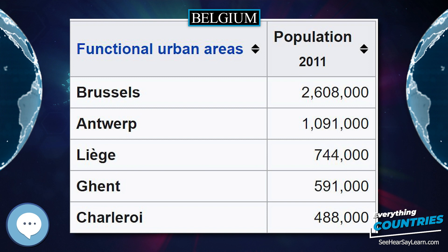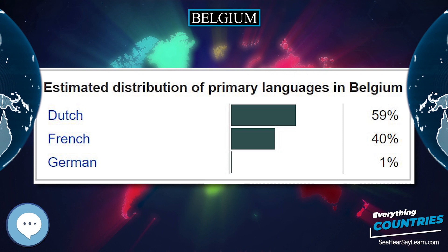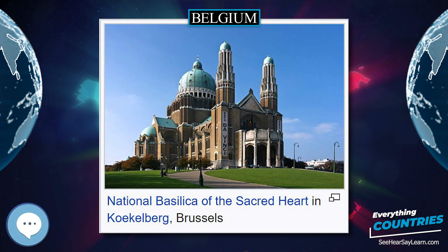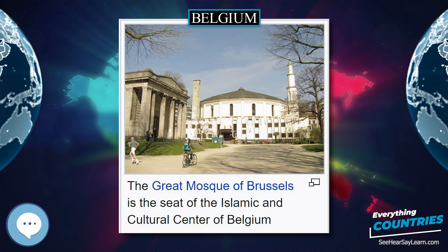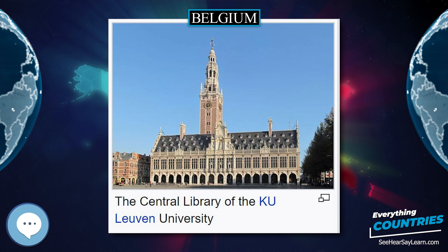Belgium's strongly globalized economy and its transport infrastructure are integrated with the rest of Europe. Its location at the heart of a highly industrialized region helped make it the world's 15th largest trading nation in 2007. The economy is characterized by a highly productive workforce, high GNP, and high exports per capita. Belgium's main imports are raw materials, machinery and equipment, chemicals, raw diamonds, pharmaceuticals, foodstuffs, transportation equipment, and oil products. Its main exports are machinery and equipment, chemicals, finished diamonds, metals and metal products, and foodstuffs.